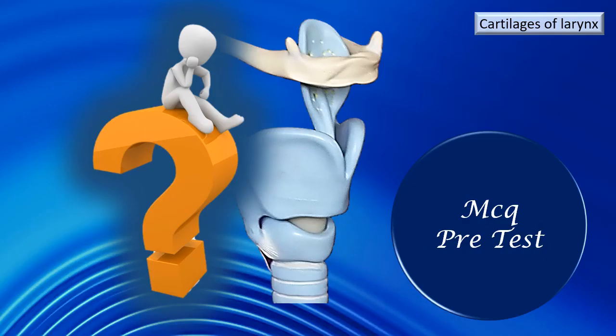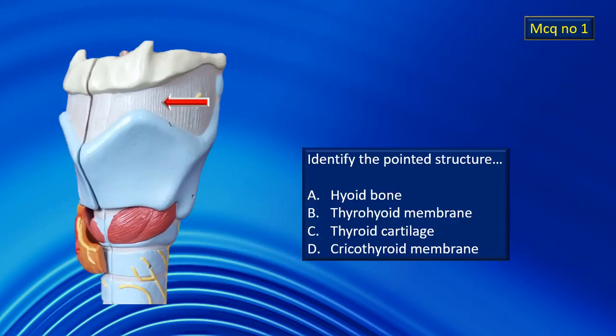Let's start with a few image-based MCQs. First MCQ: here is a model of the larynx. Identify that particular structure pointed out by the red arrow. There are four options, one of them is the correct answer. Identify the correct answer.